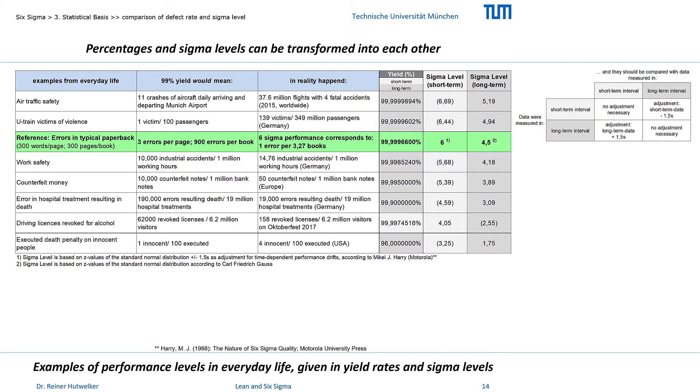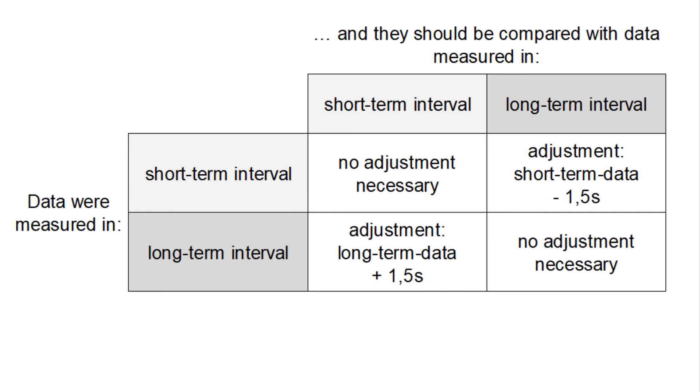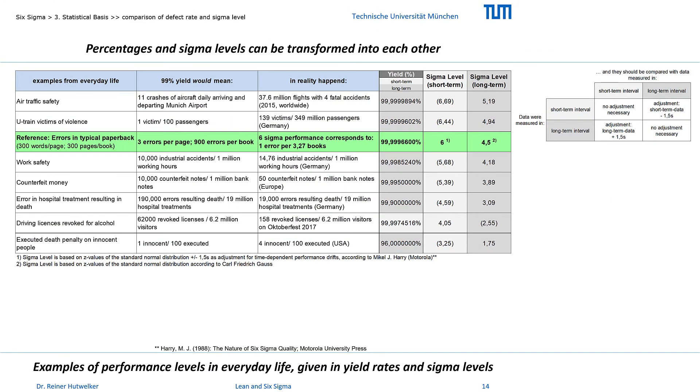But we won't need this for your project. In a typical 6 sigma project, we compare short-term measurements from the measure phase before with short-term measurements from the control phase after improvements. And for both samples, we will calculate the sigma levels based on z-values according to the standard normal distribution. The sigma guide tool contains a calculator that allows you to make an initial assessment of the performance of your process.